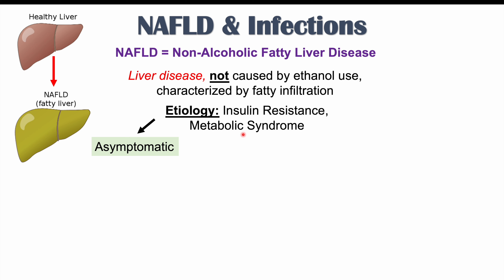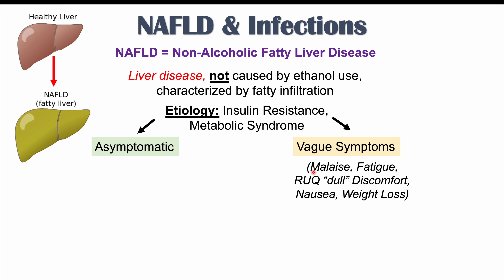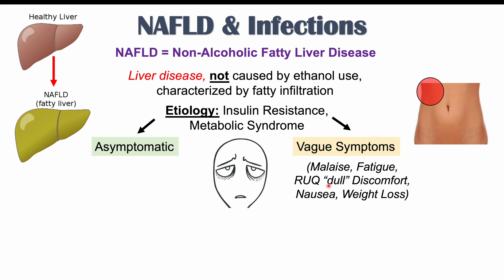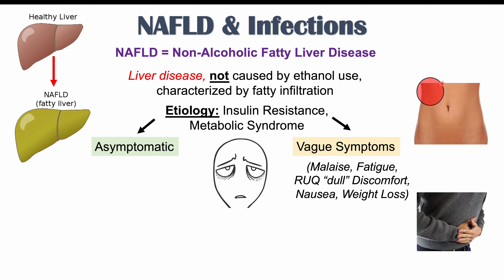Signs and symptoms of having this condition include it being asymptomatic — many patients have no symptoms at all. In patients who do have symptoms, they are often vague, including malaise, just feeling generally unwell, fatigue, and a right upper quadrant dull discomfort. The right upper quadrant is where the liver is located, and some patients describe a dull discomfort there. Other patients can have nausea and some mild weight loss as well.